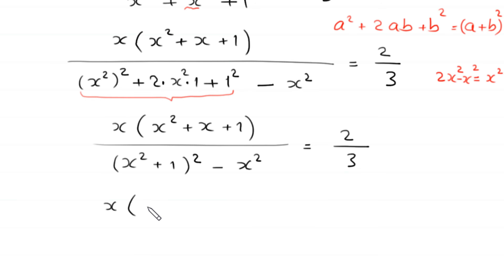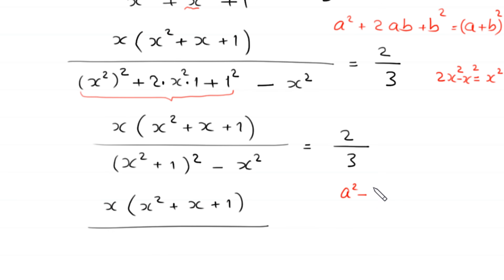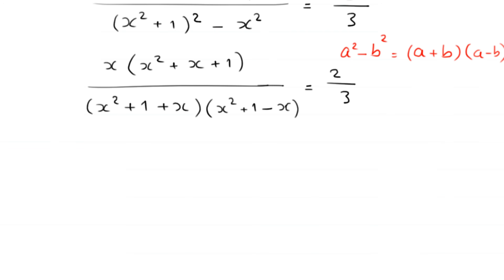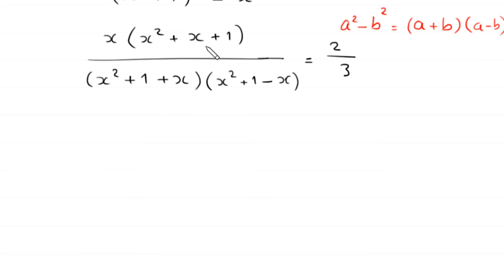Now applying the difference of squares identity a squared minus b squared equals (a plus b) times (a minus b), the expression (x squared plus 1) whole squared minus x squared becomes (x squared plus x plus 1) times (x squared minus x plus 1). The factor (x squared plus x plus 1) in the numerator cancels with (x squared plus x plus 1) in the denominator, leaving x divided by (x squared minus x plus 1) equal to 2 over 3.